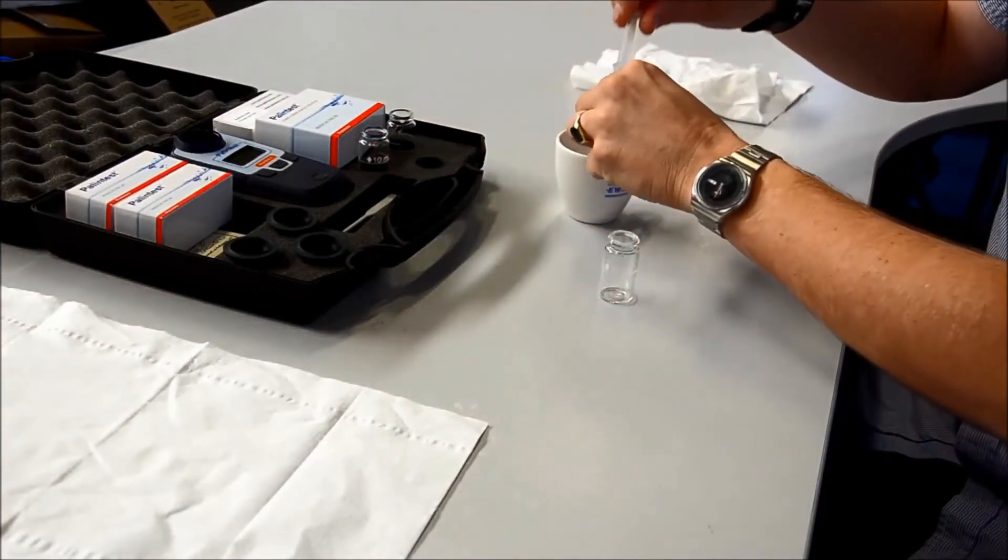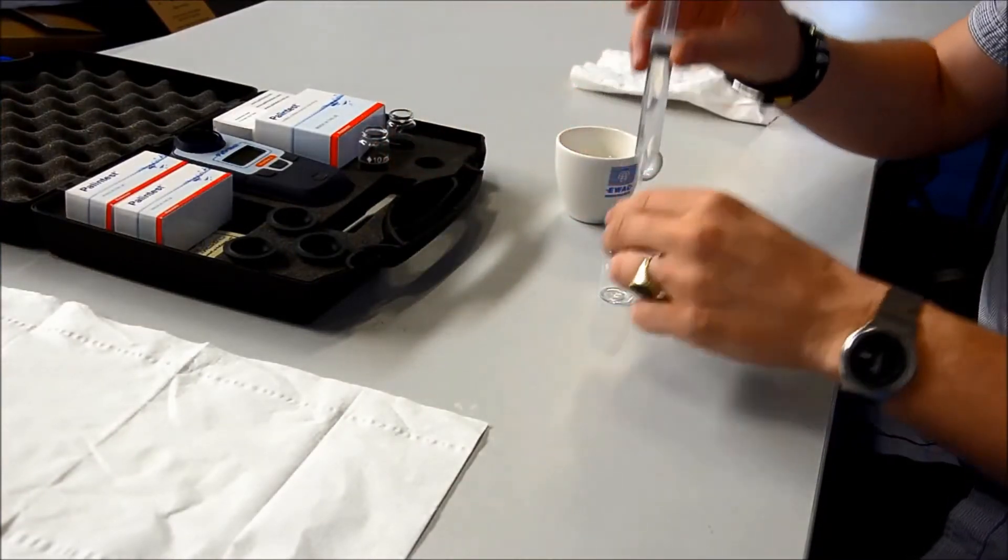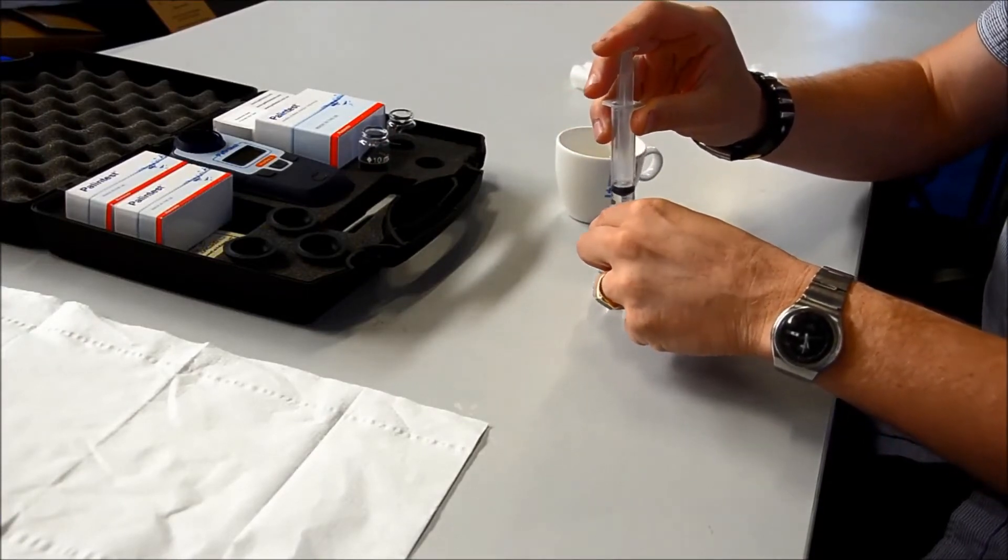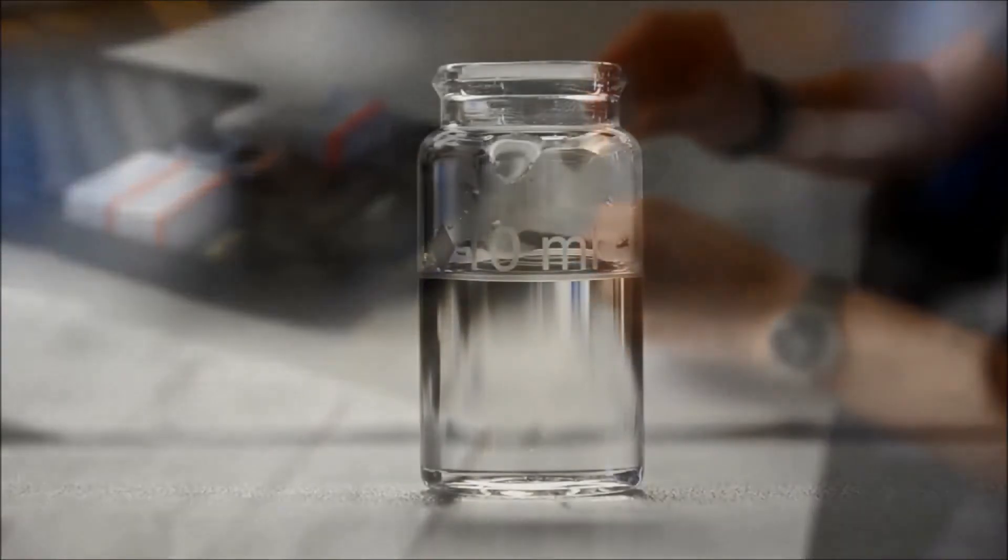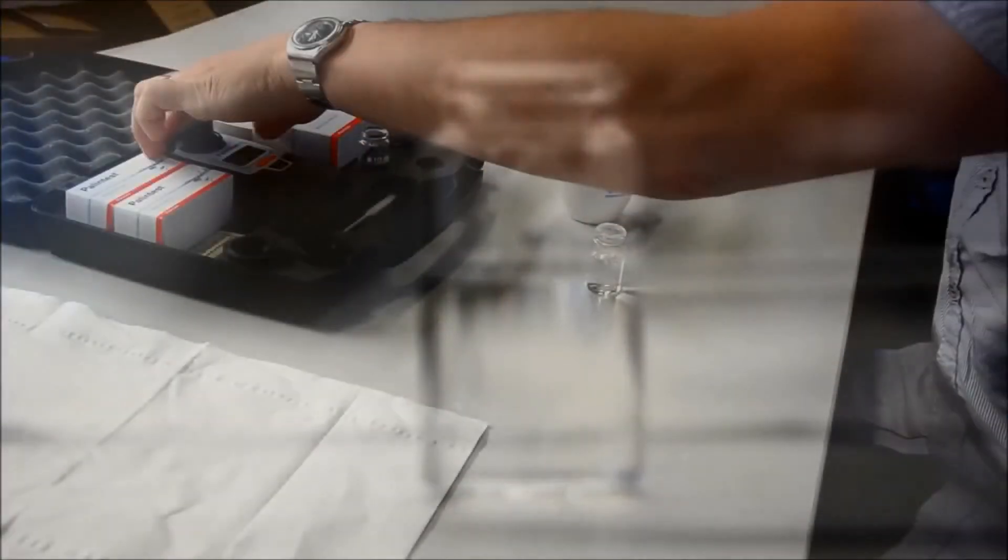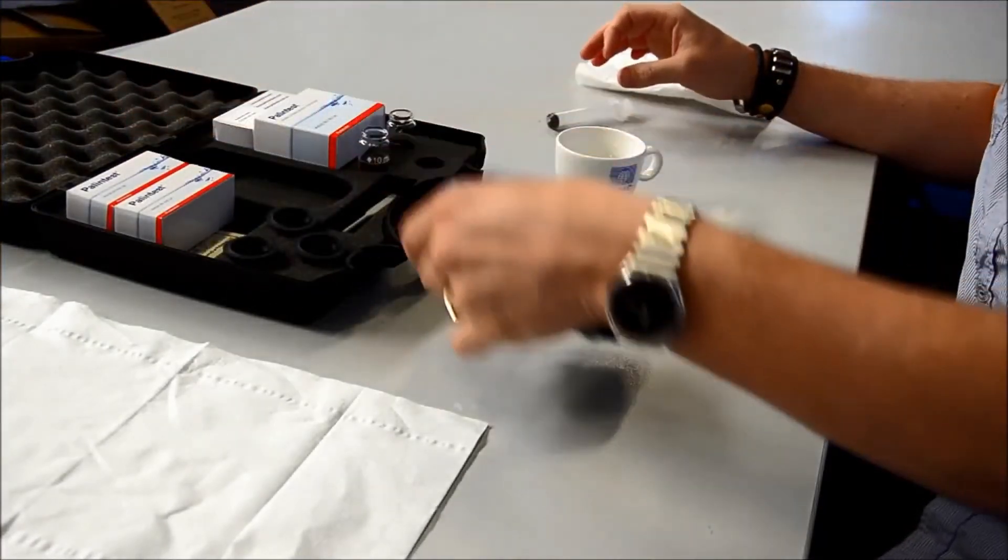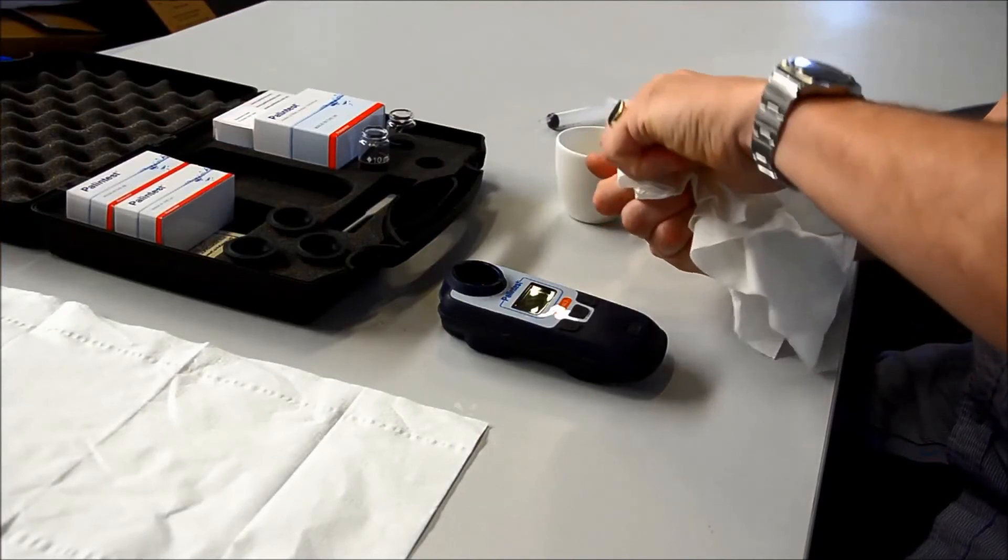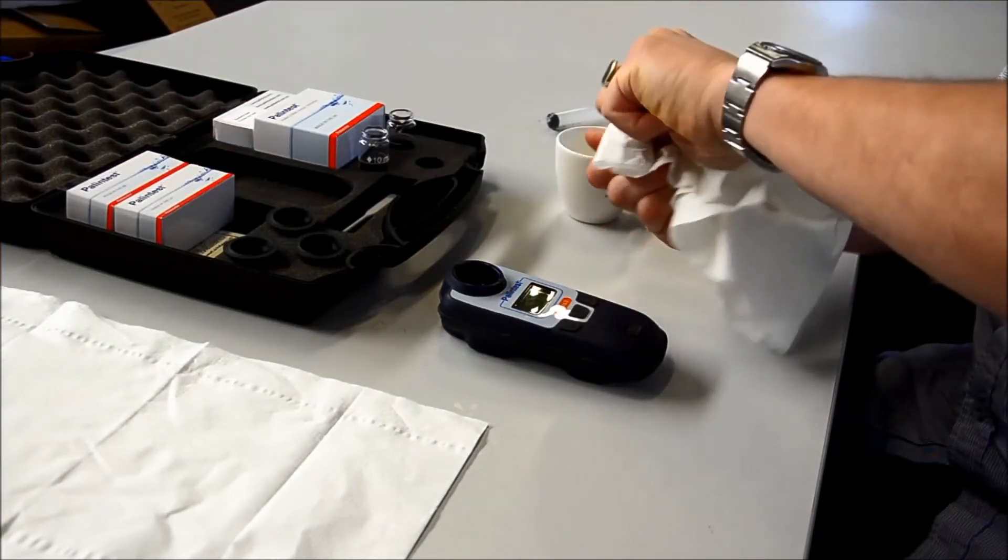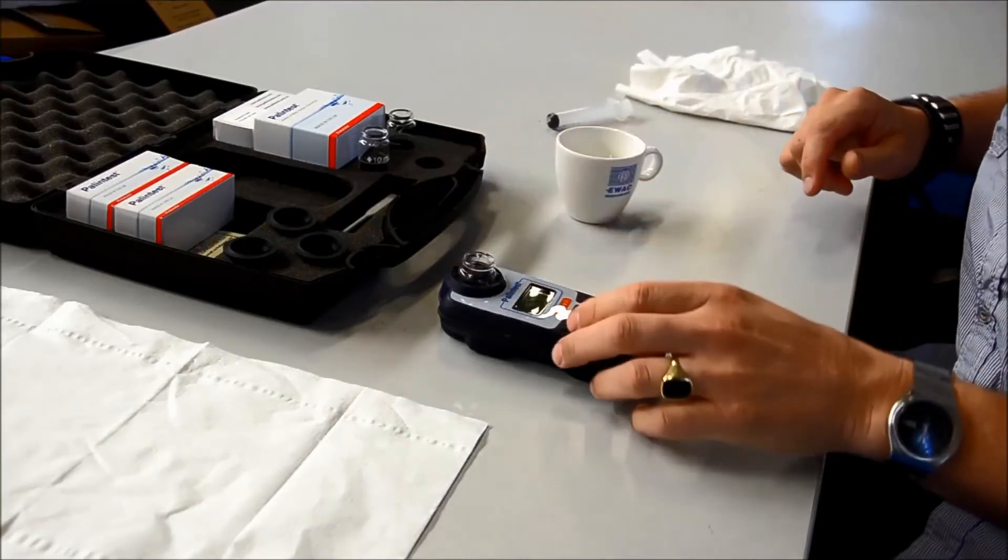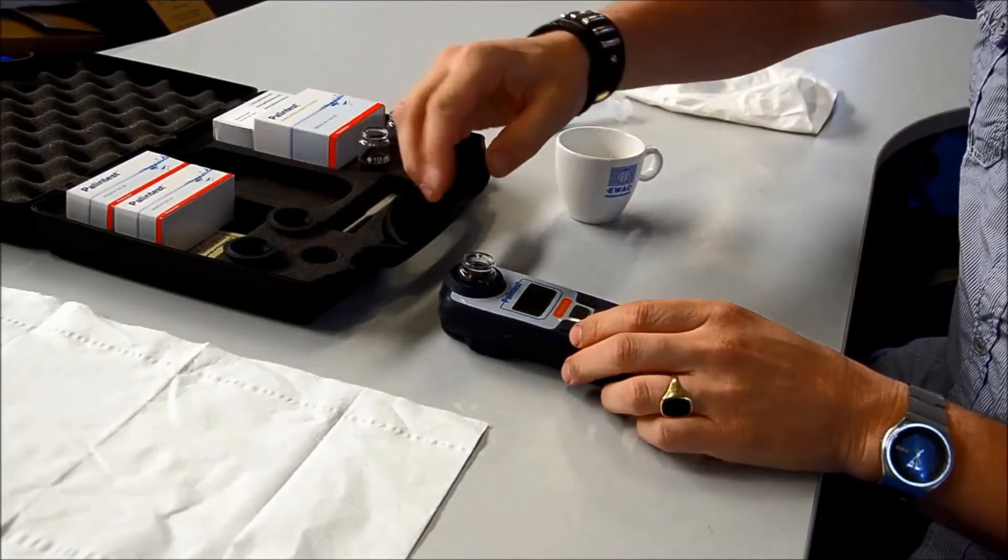Use a syringe to take water from the coffee cup and then pour exactly 10 milliliters of water into the glass cuvette. As you can see here the lowest line of the water level should match exactly with the line on the glass. To make sure there's no fingerprints on the outside we clean the outside of the cuvette before placing it into the measurement unit. Then we place the black rubber cap.